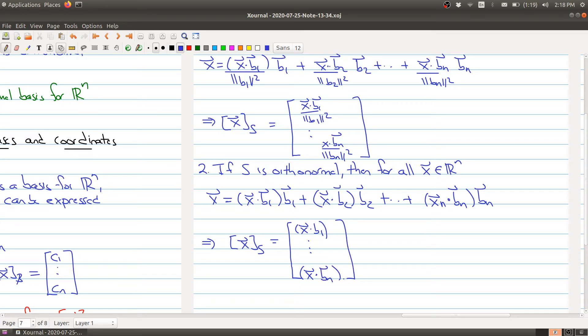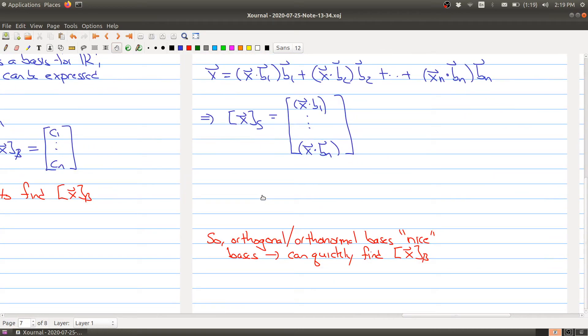This is simply x dotted with b₁ all the way down to x dotted with bₙ. So we don't actually need to find a system of equations and solve it. We can actually just use the dot product with my basis once I know that it's orthogonal. Orthogonal and orthonormal bases are nice bases, and one of the reasons is once you have such a thing, you can quickly find the b-coordinate of x using dot products and the norms without using a system of linear equations.